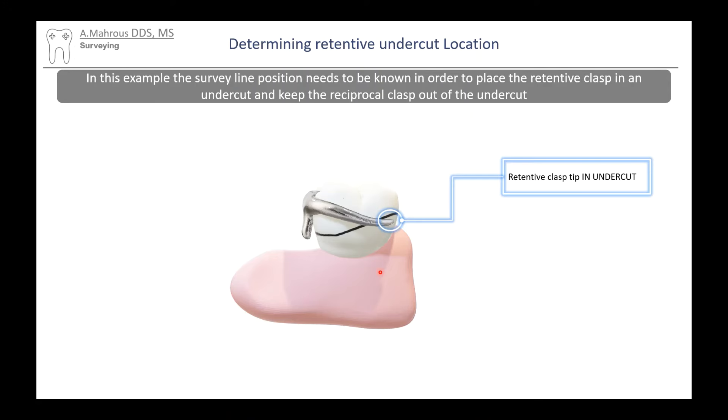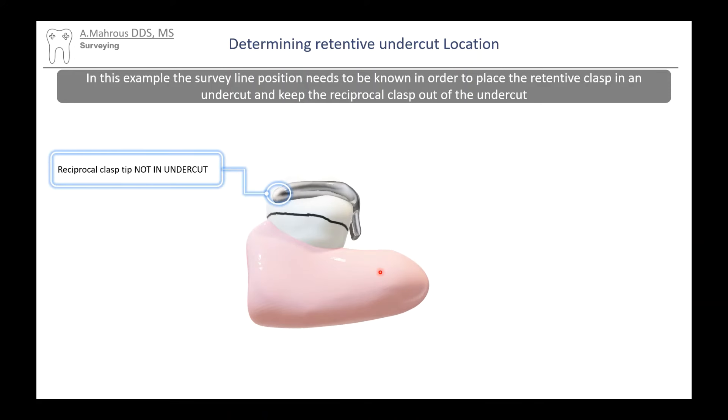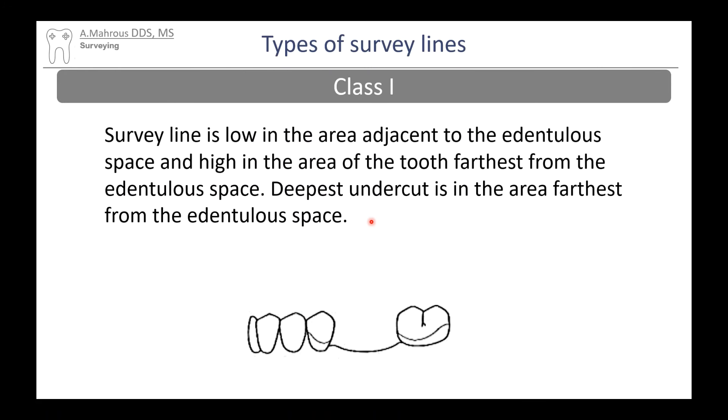So, why do we need to draw the survey line, and why do we need to know where the undercuts are? Different clasps require different undercut depths. Additionally, reciprocal elements like the reciprocal clasp need to be above the survey line. For those two reasons, we will need to know where undercuts are located and how deep they are. And of course, we have classification systems in place for our survey lines.